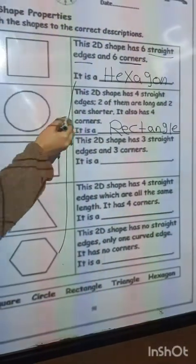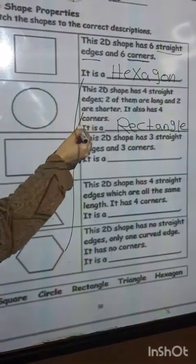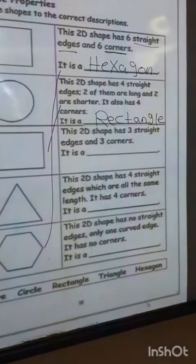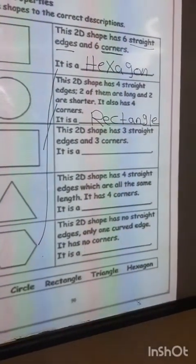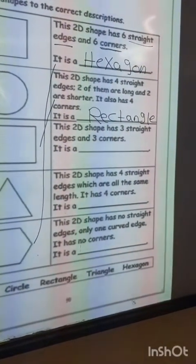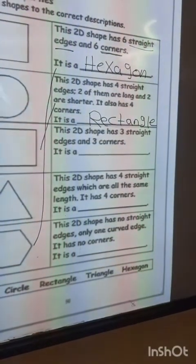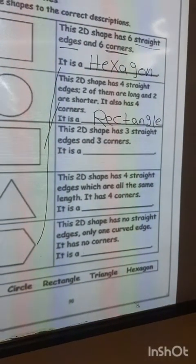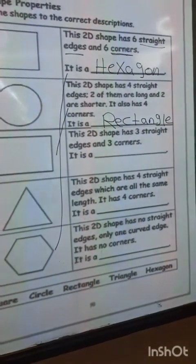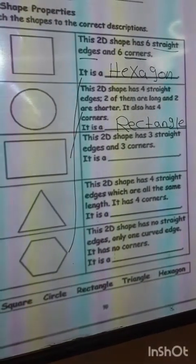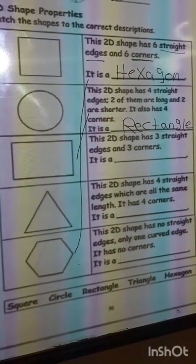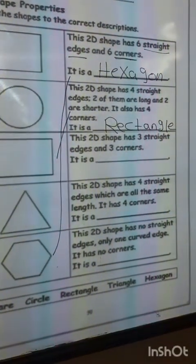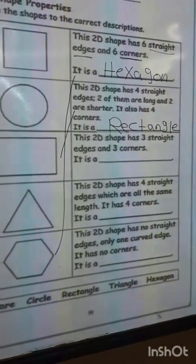Match the shape. This 2D shape has three straight edges and three corners. This is a triangle — three straight edges and three corners.